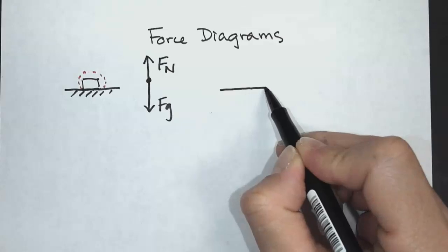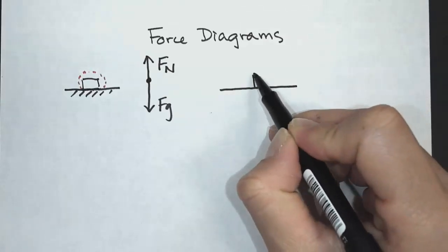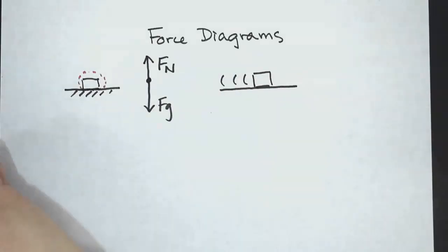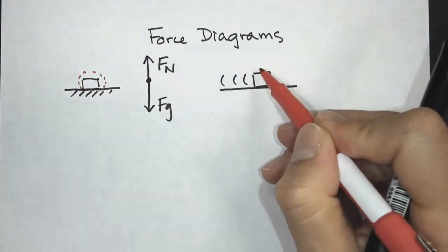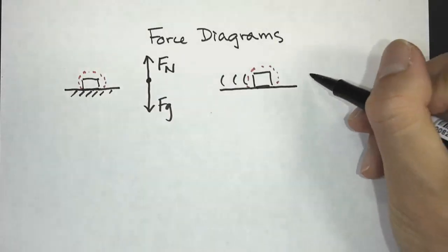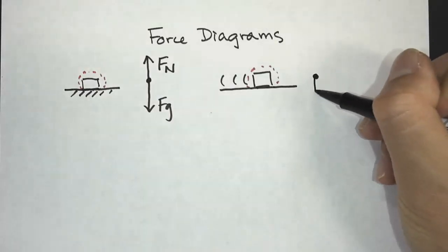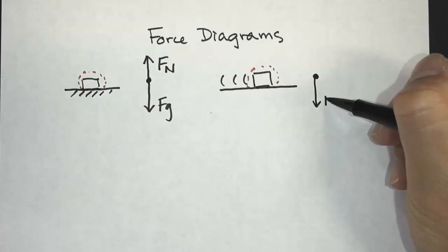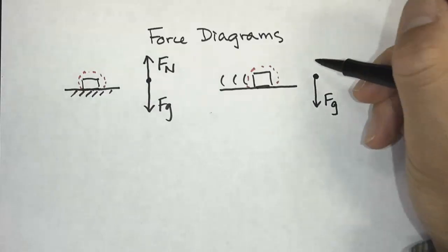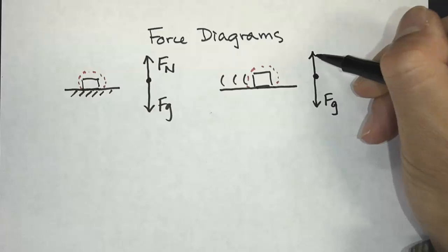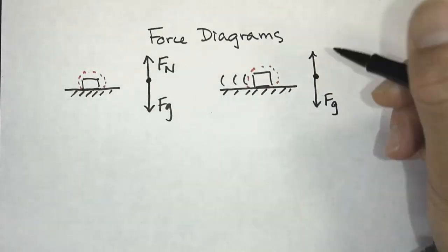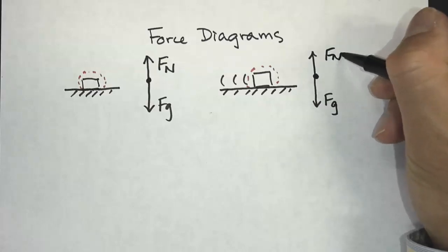Now let's take a look at an object that is moving at constant velocity. Here is my system boundary. I like to start with the gravitational force, because all these objects will have a gravitational force down. It will also have a normal force from the table or ground, and this is going to be the normal force.